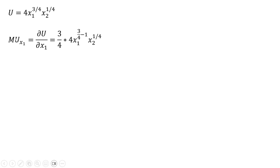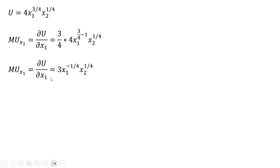Next, we'll get the marginal utility of good 1 by taking the partial derivative of the utility function with respect to good 1. The exponent 3/4 on good 1 comes down in front, and we subtract 1 from that exponent. Simplifying: 3/4 times 4 leaves us with 3, and 3/4 minus 1 gives us an exponent of minus 1/4.